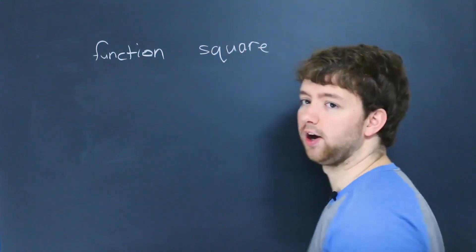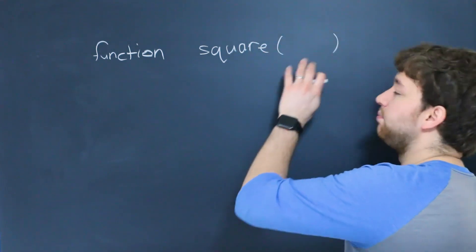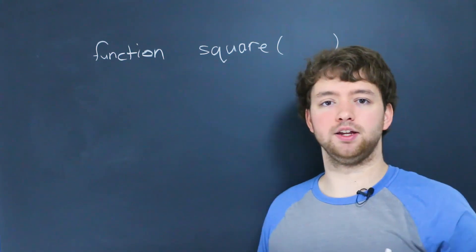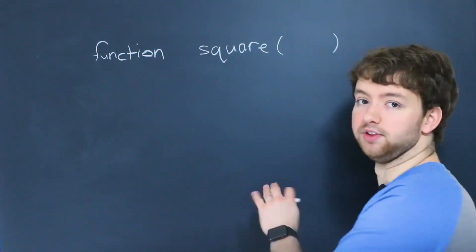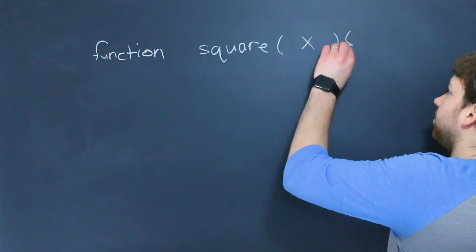And what this will do is it will square a number or multiply it by itself. Then we put parentheses, and we put any variables we're going to need in this function inside of these parentheses. So for example, we could just say x. Then we have what's known as the function body, which is indicated by curly braces.